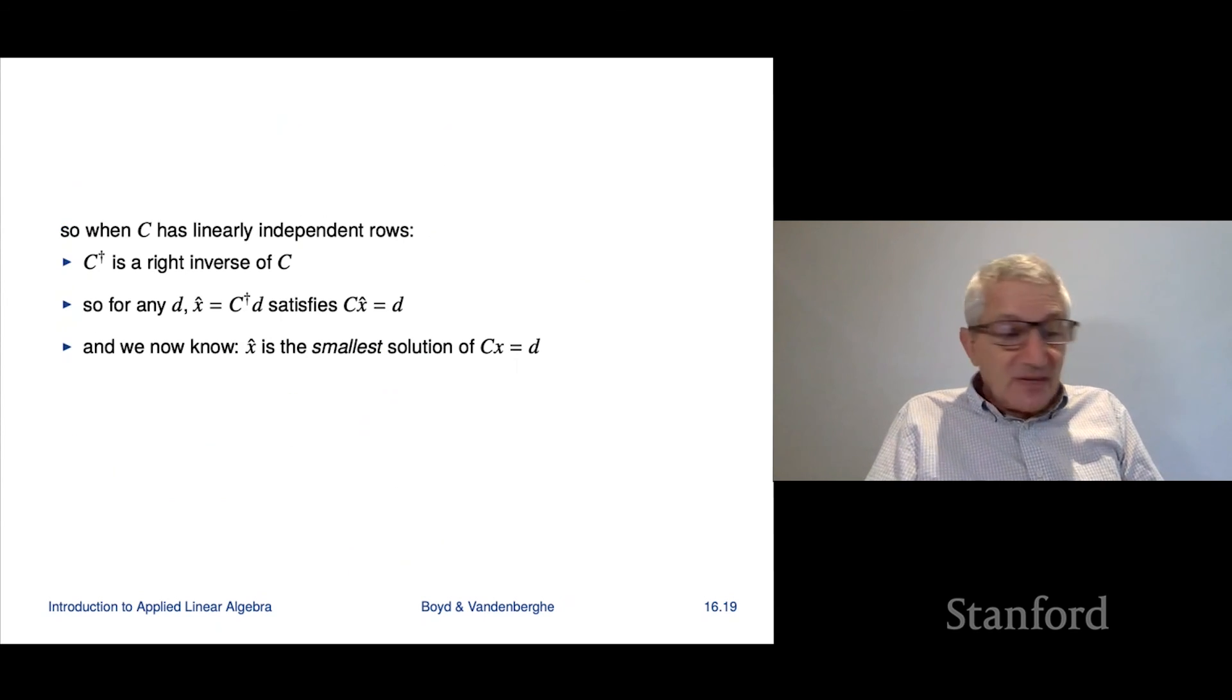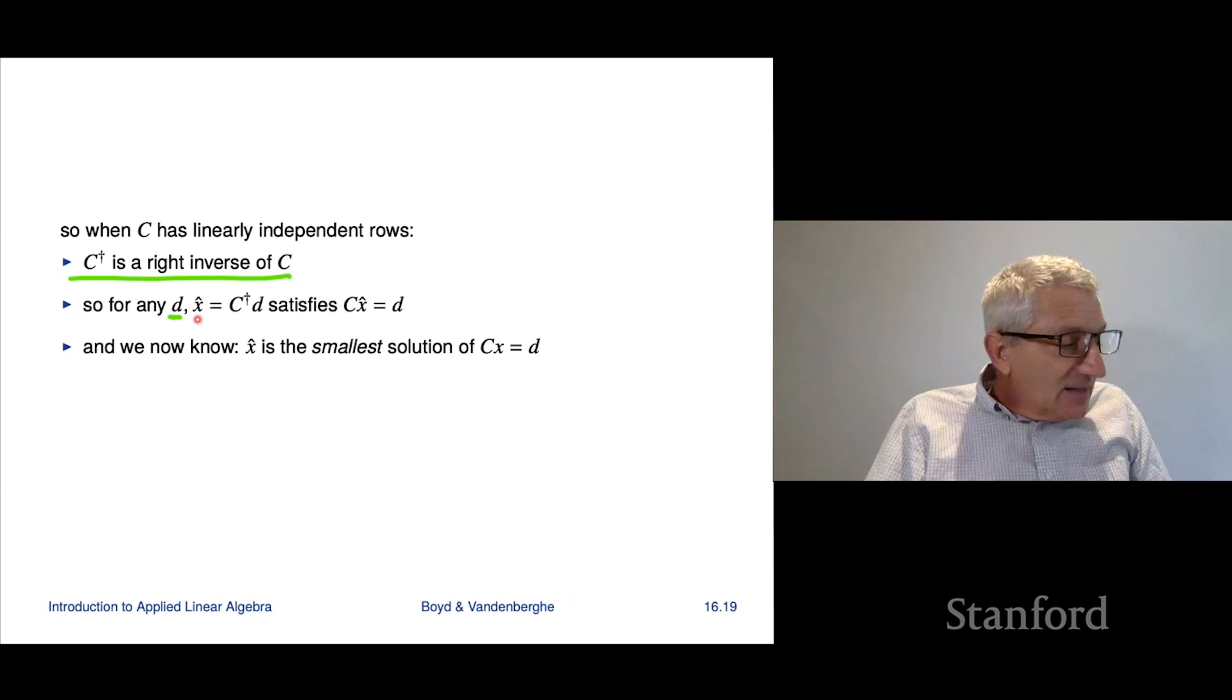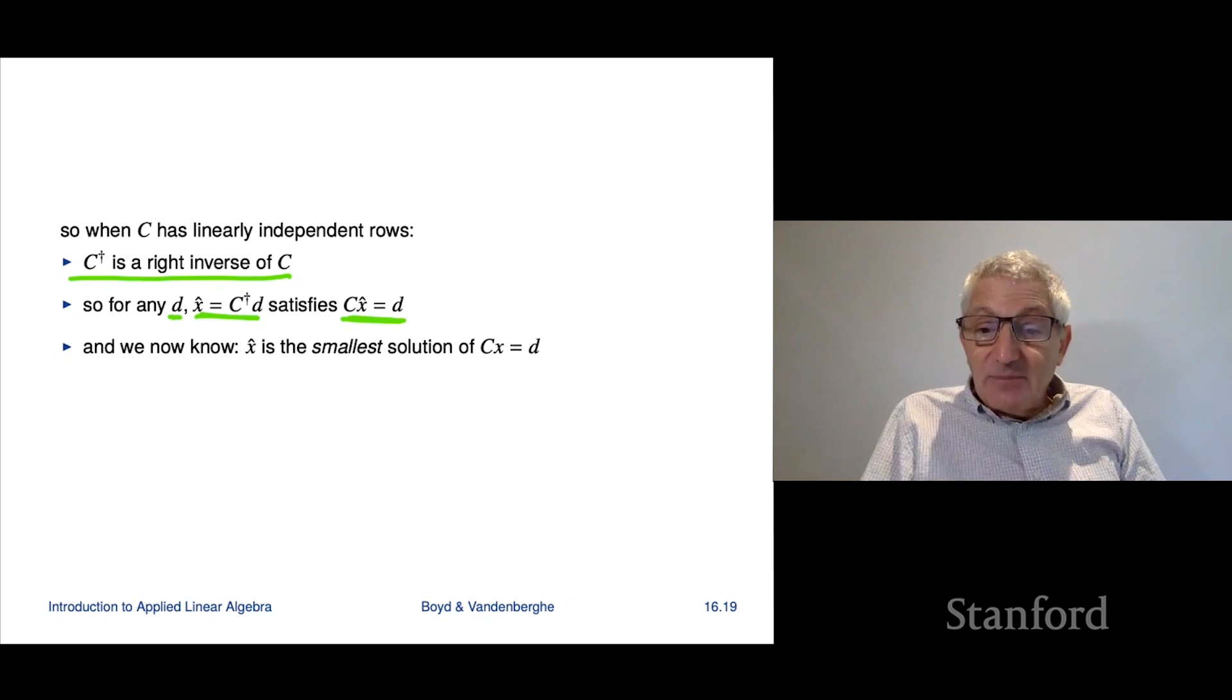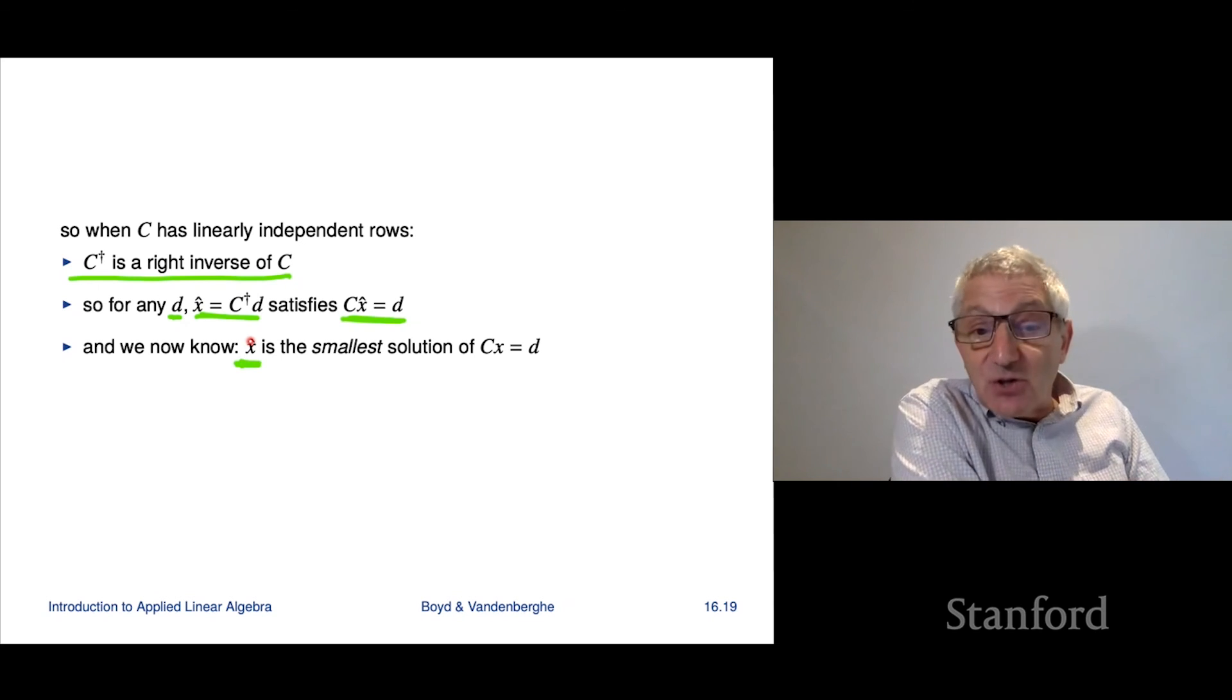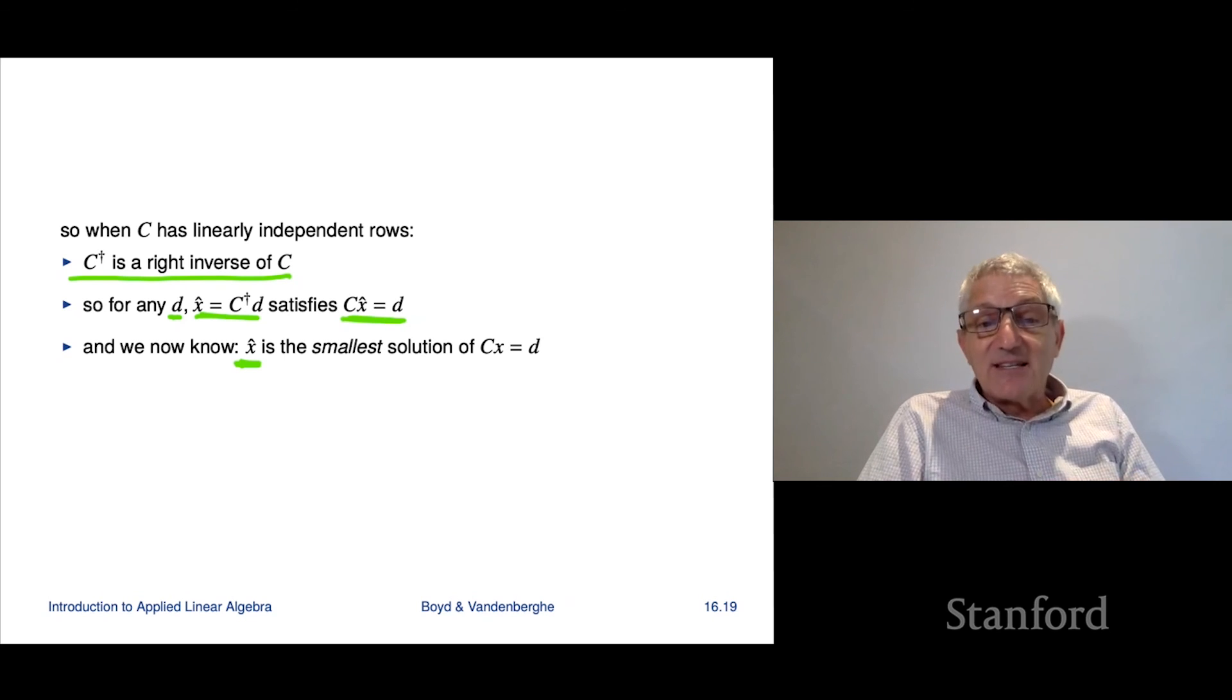So what this says is if a matrix c has linearly independent rows, then we already saw, well, a while ago that the pseudo-inverse of that matrix is a right inverse of c. We already saw that. And what that tells you, you know, is that for any d at all, if you plug in x hat equals c dagger d, that satisfies cx equals d. That's what it means to be a right inverse, right? But now we know more. This is a special right inverse and it is the right inverse. It says that x hat, which is a solution of cx equals d. It's really cool. Now we know it's actually the solution with the smallest norm. So it gives you the smallest solution of cx equals d. So it's very nice. Ties a bunch of stuff we've seen together. And of course, you can compute this by a QR factorization on C transpose, right? So that's all. Everything sort of ties nicely together.